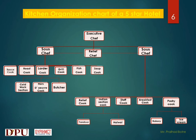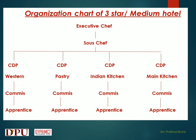This is the organization chart of a three-star or medium category type of hotel. Executive chef is the main head person who is leading the kitchen, followed by sous chef looking after various departments in a hotel. Usually in medium category hotels, you will find various sections like western section, pastry section, Indian section, and main kitchen, which are headed by CDP, chef de partie, or head chef, that is commie one, working with various commie and apprentice.